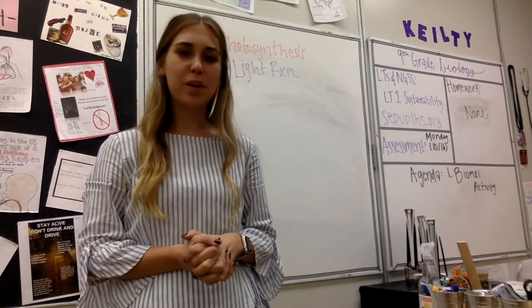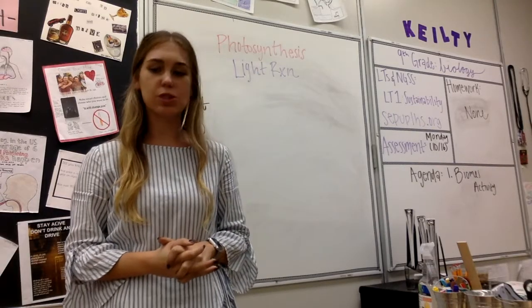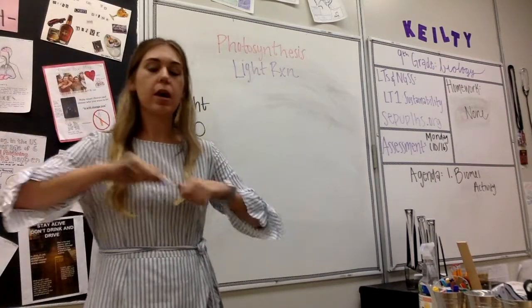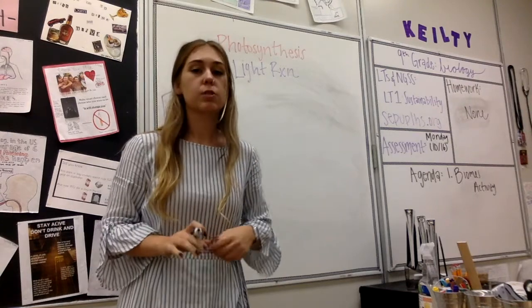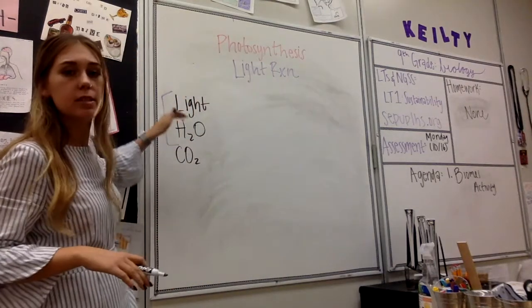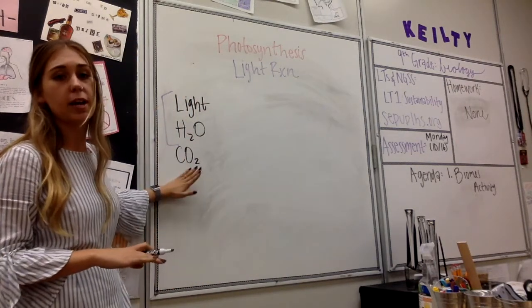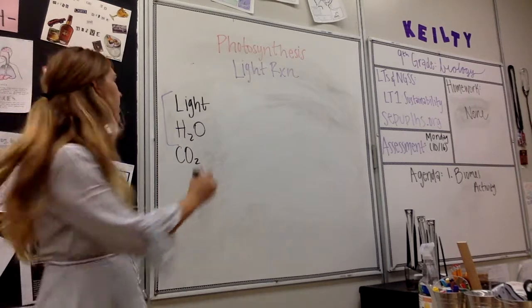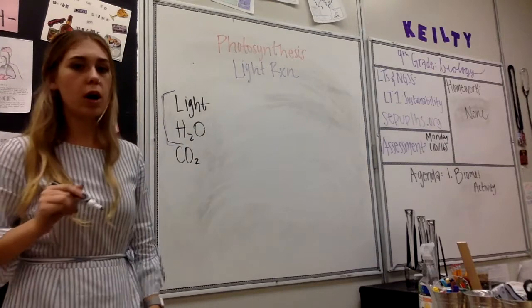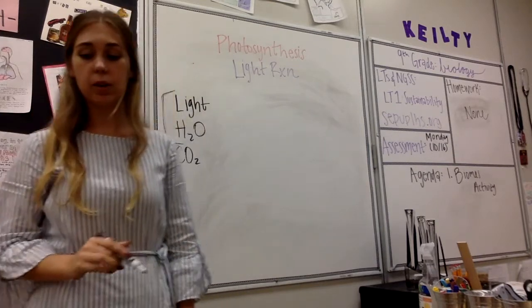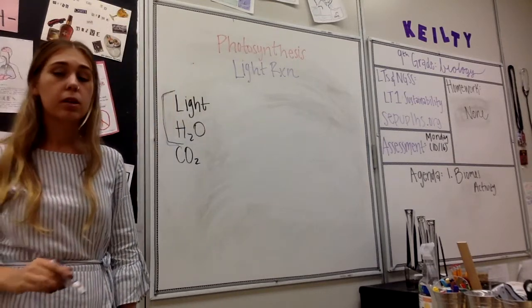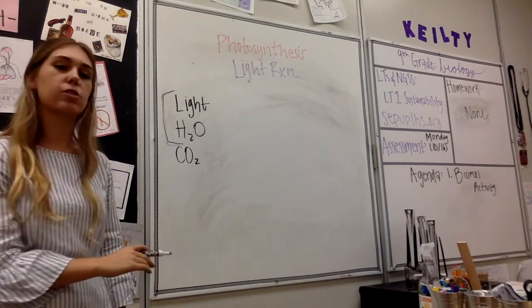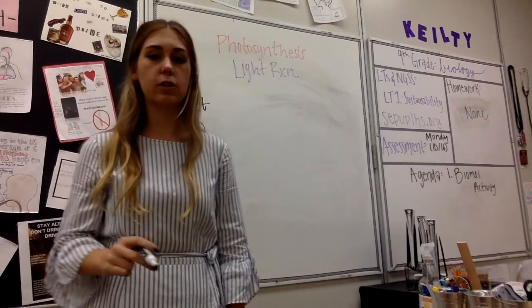We're going to start off talking about the light-dependent reactions, which do require light in order to occur. This is the first part of photosynthesis. As a reminder, we are starting photosynthesis with light, water, and carbon dioxide. Our light-dependent reactions are focusing in on light and water. Carbon dioxide will come into play later on in the Calvin cycle. After I explain all of this, I will put a picture up on the screen for you to take a look at how all of this is occurring.